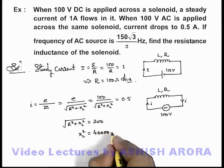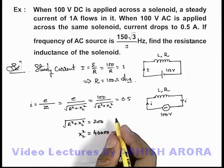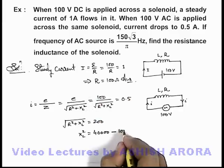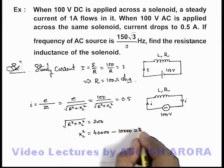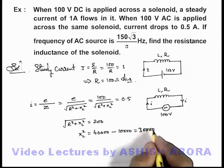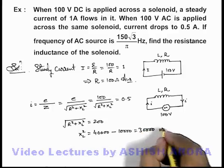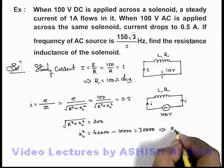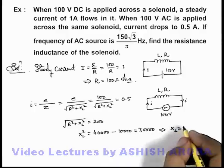And in this situation if we square the term, the value of XL² we are getting, this square of 200 is 40,000 minus R², R² here will be 10,000, so this will be 30,000. That means the value of inductive reactance we are getting is √30,000.